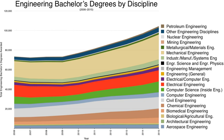In the UK, the term 'engineer' is applied to non-degree vocations such as technologists, technicians, draftsmen, machinists, mechanics, plumbers, electricians, repair people, and even semi-skilled or unskilled occupations. In recent developments by government and industry, to address the growing skills deficit in many fields of UK engineering, there has been a strong emphasis on dealing with engineering in school and providing students with positive role models from a young age.